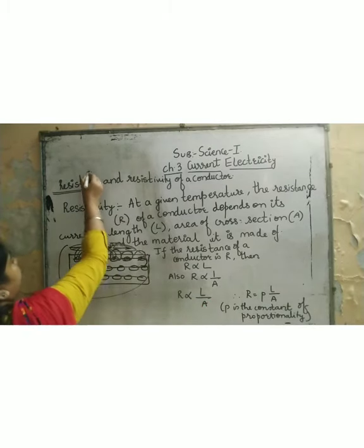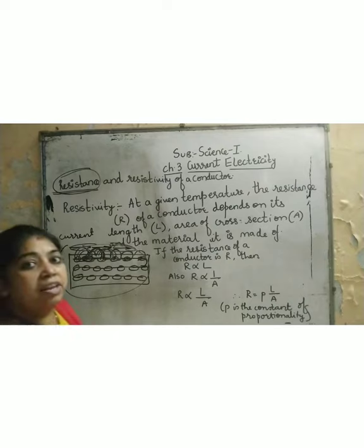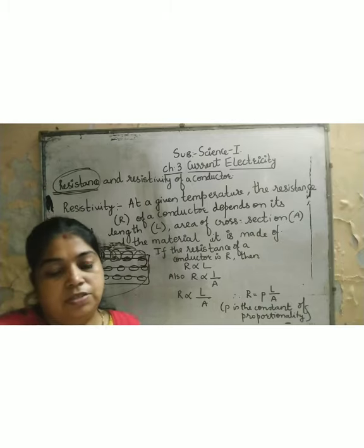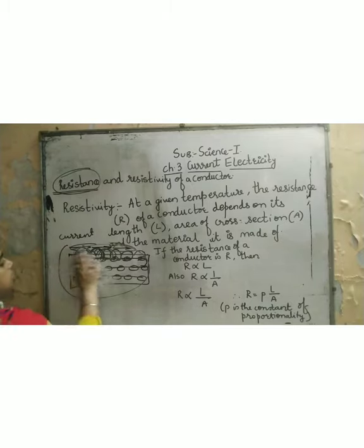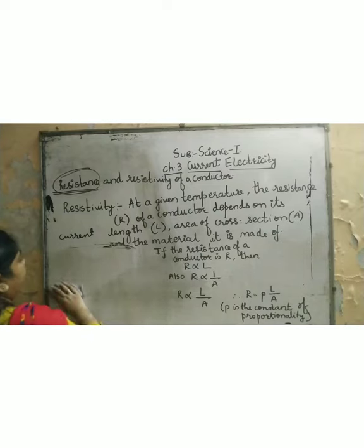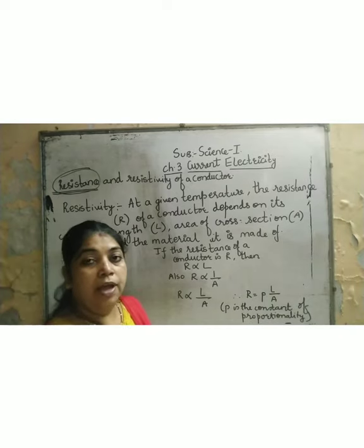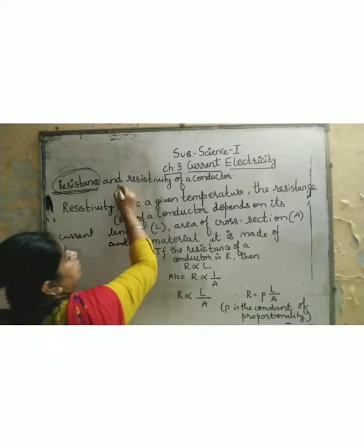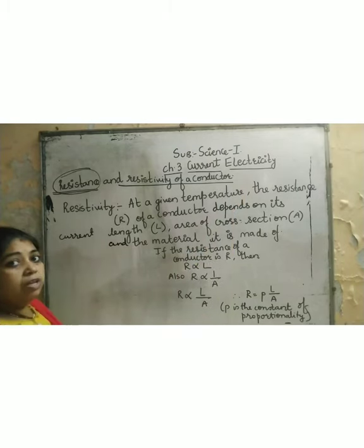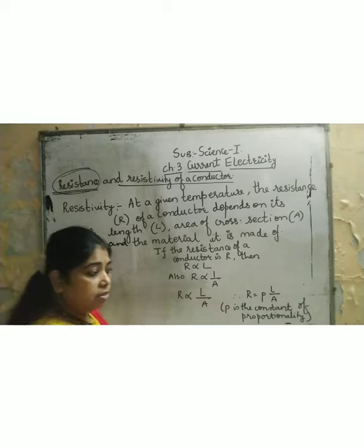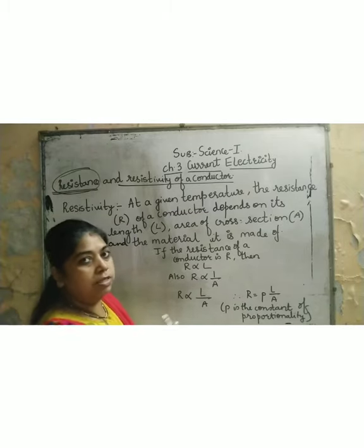This hindrance is called resistance. So the electrons are opposing the current and simultaneously creating resistance due to the hindrance caused. That is the meaning of resistance.